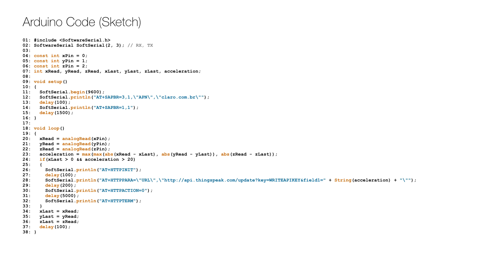In the setup, the software serial communication is initiated on line 11, then the APN for my operator is configured and the GPRS connection is opened on line 14. The eternal loop starts by getting the values from the accelerometer on lines 20 to 22 and checks whether acceleration in any dimension is greater than the threshold on line 23. If it is, an HTTP connection is initiated on line 26, the URL is set on line 28 and the request is made on line 30. The HTTP connection is terminated on line 32 and then the previous values are saved on lines 34 to 36.